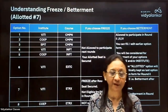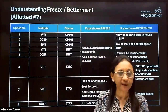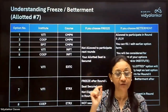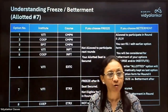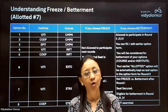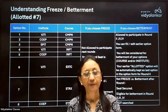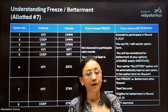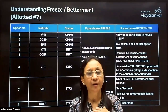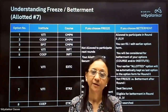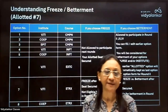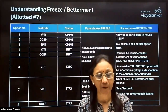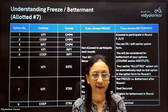In the first CAP round, candidates who get the very first option allotted — that gets auto-frozen. But any candidate who is allotted option two onwards has a choice to go for betterment in the second CAP round.